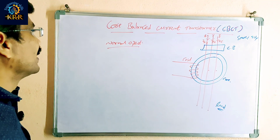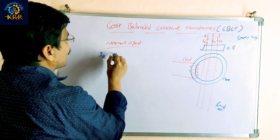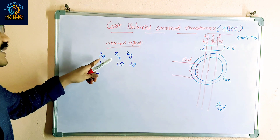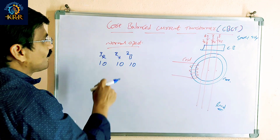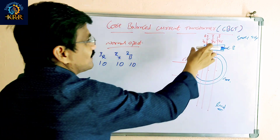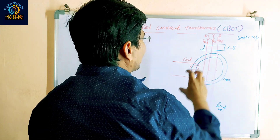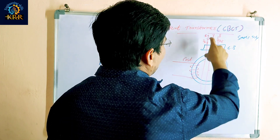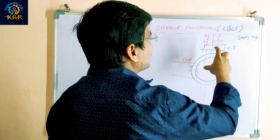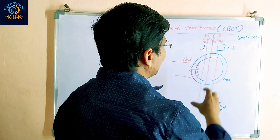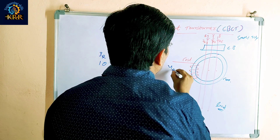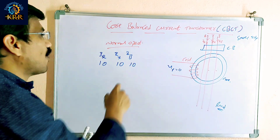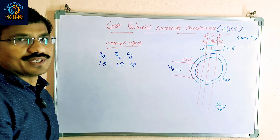In normal operation, IR = 10A, IY = 10A, IB = 10A. These three feeders carry 10A each. Each phase generates a corresponding flux. The resultant flux is zero, so the voltage at the coil is zero. Normal operation continues with no tripping.